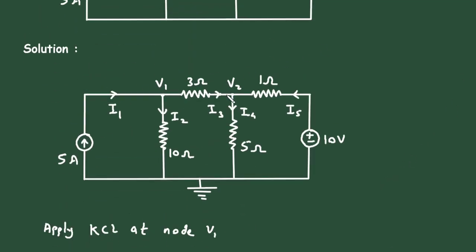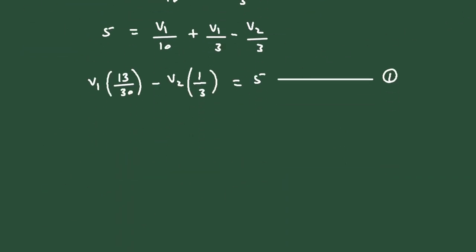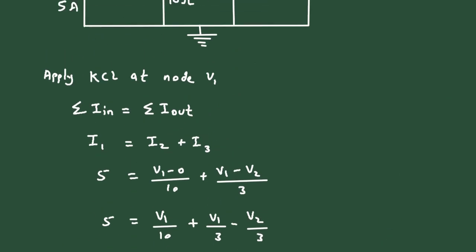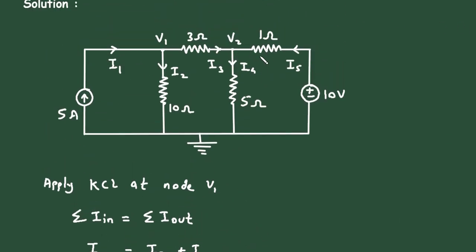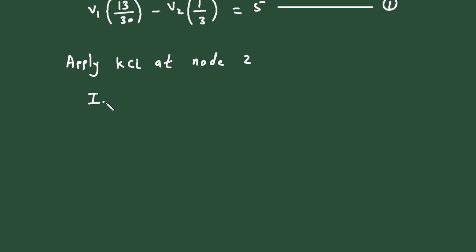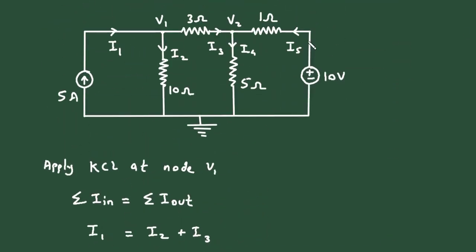Now apply KCL at node 2. Again according to KCL, summation of all entering current equals summation of all leaving current. Here at this node, the entering currents are I3 and I5, and the leaving current is I4. So we write I3 plus I5 is equal to I4.